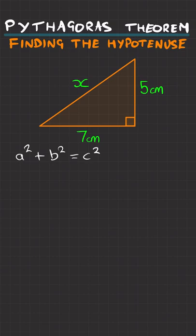Next, let's substitute in those values. I'll call this side a, this side b, so we'll have 5 squared plus 7 squared equals x squared.